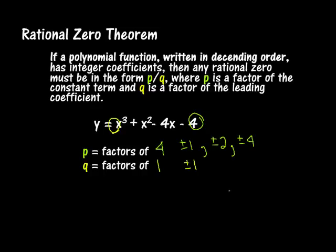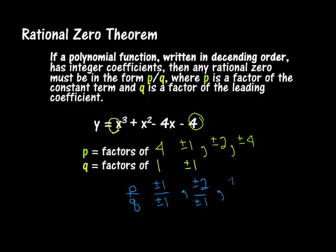Any rational zero must be in the form p divided by q. So p divided by q gives us: plus or minus 1 divided by plus or minus 1 gives plus or minus 1; plus or minus 2 divided by plus or minus 1 gives plus or minus 2, because a whole number divided by 1 is itself; and plus or minus 4 divided by plus or minus 1 gives plus or minus 4. So our possible rational zeros are plus or minus 1, plus or minus 2, or plus or minus 4. We'll use synthetic division to figure out which ones work.